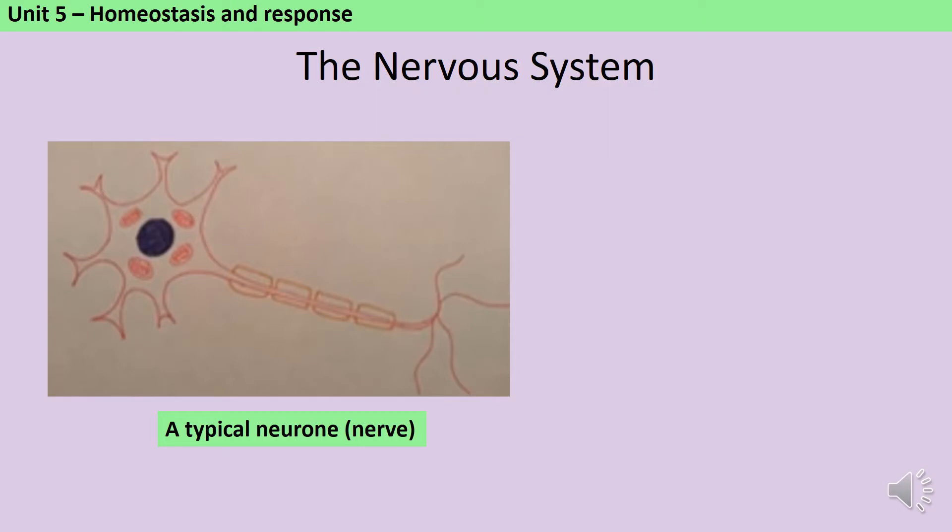Coordination and control in the human body are carried out either by the endocrine system, which involves hormones and has a separate video in the series, or by the nervous system. If you've watched the introductory video, then you know that both systems are made up of receptors, coordination centers and effectors.